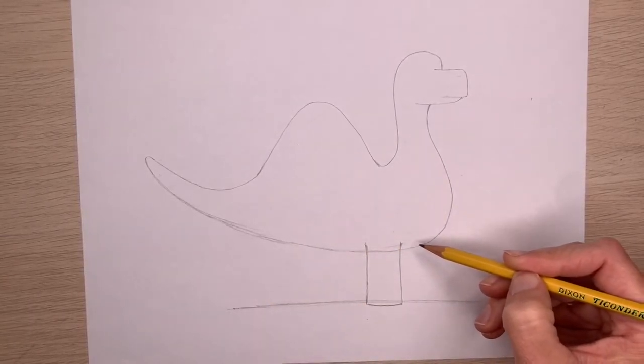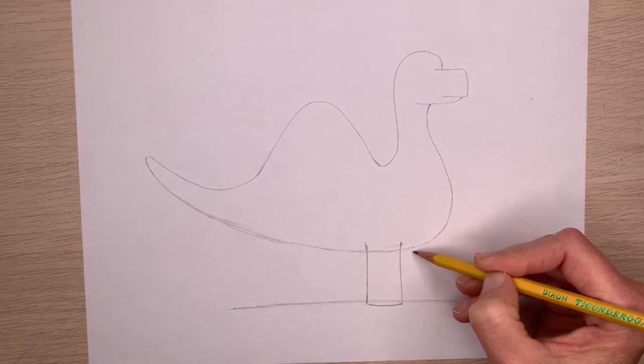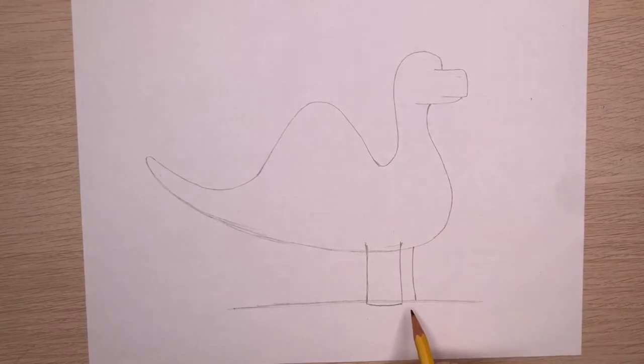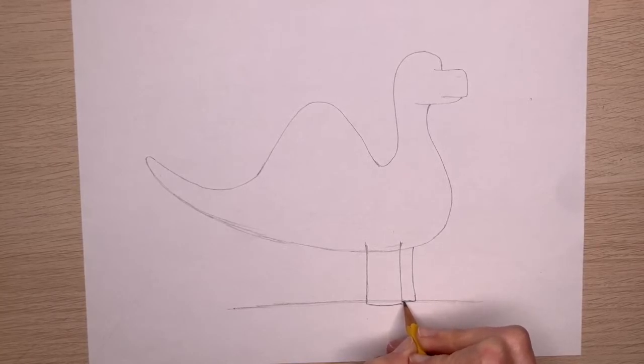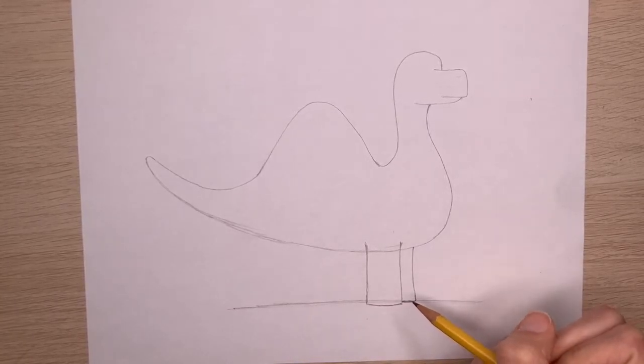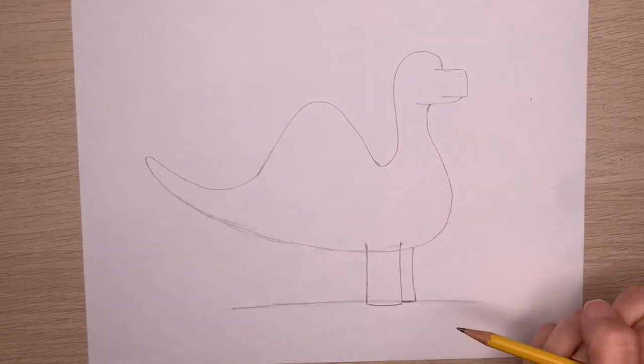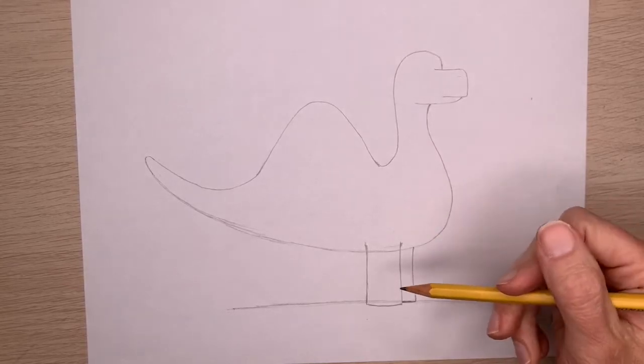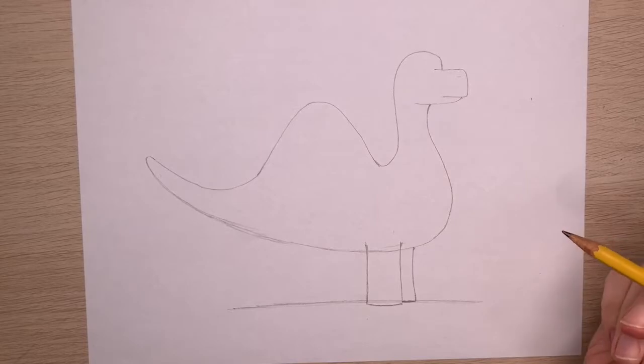And you'll notice that my lines come up above the tummy line just a little bit. Now the leg behind that is actually going to start right on that tummy line. And it's going to come down and stop right on that ground line. So it's a tiny bit shorter, but it's not actually shorter. We draw it that way because it's further back from us. It's further away from where we're seeing this dinosaur. And thus it looks a little bit smaller and shorter. That's kind of how perspective works.